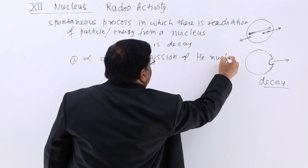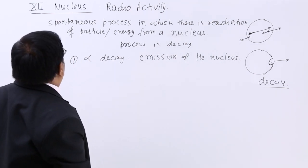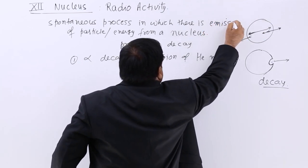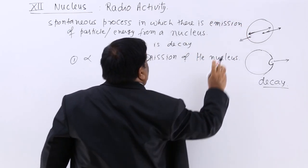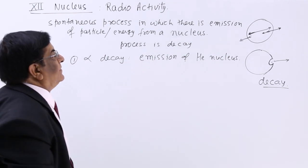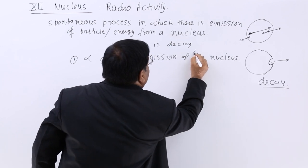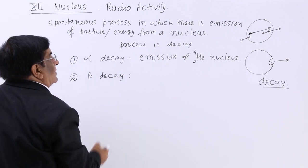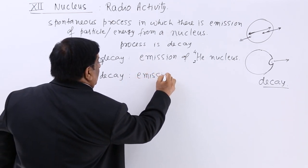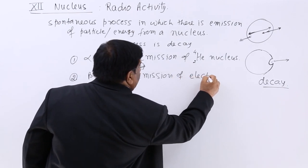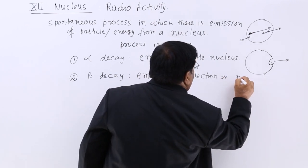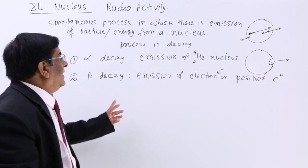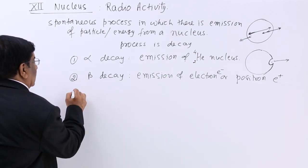In alpha decay, there is emission of a helium nucleus. The second is beta decay, in which there is emission of an electron or a positron — electron (e⁻) or positron (e⁺). If either of these is emitted, we say it is a beta decay.